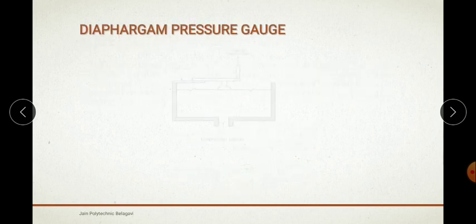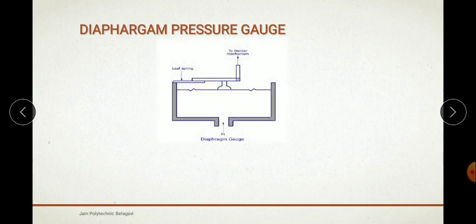Next is the diaphragm pressure gauge. This figure shows the mechanism pointer, the leaf spring, and the diaphragm gauge. The diaphragm pressure gauge is a device that uses a diaphragm with a known pressure to measure pressure in a fluid. It has different uses such as monitoring gas pressure, measuring atmospheric pressure, or recording the strength of a vacuum in a vacuum pump. When the pointer rotates, it loses contact and pressure increases, causing the diaphragm to bend, allowing pressure to be identified and measured.